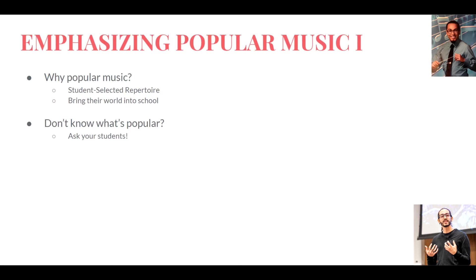It's really hard to know what's popular because interests shift very fast. What was popular for your fifth grade will not be popular for the fifth grade next year. Even if you do a Google search and get something like a Billboard list, that might not be the music your school population is actually listening to. So it's important to ask them — you can conduct surveys using Google Forms or even just informally asking them and writing it down.